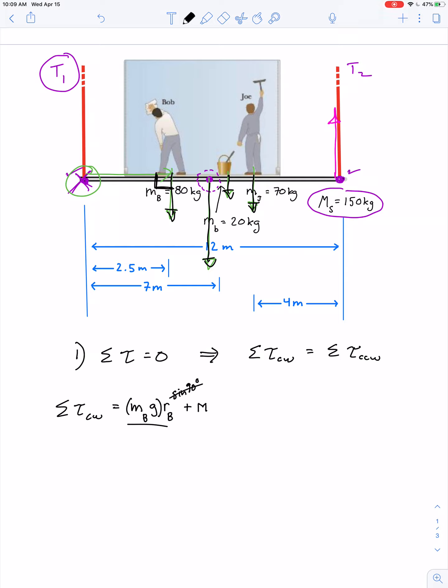Plus the mass of the entire scaffold multiplied by g times the lever arm, which is l over two, because the center of mass is in the geometric center. Plus the mass of the bucket times gravity times the lever arm for the bucket, plus the mass of Joe times gravity times the lever arm for Joe.